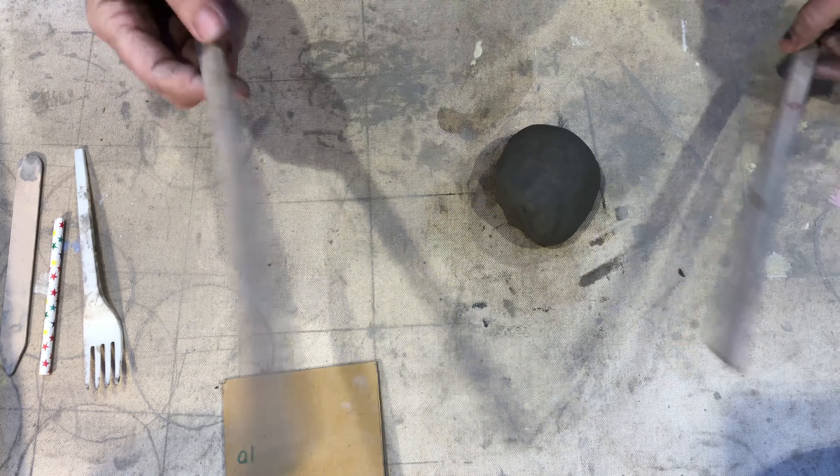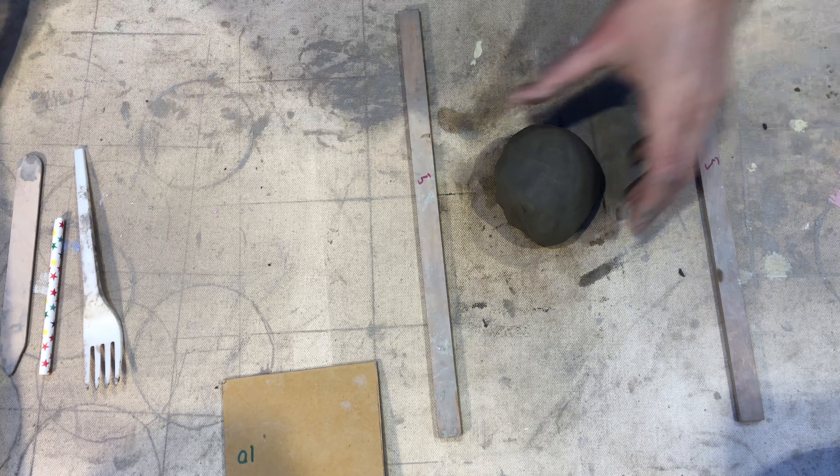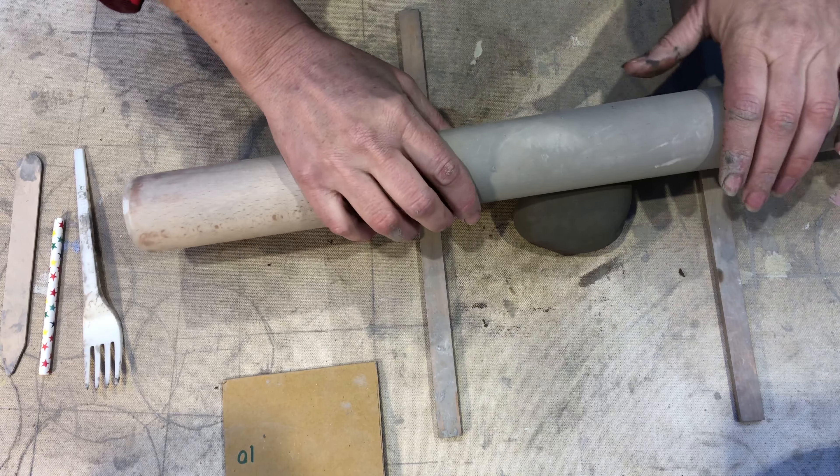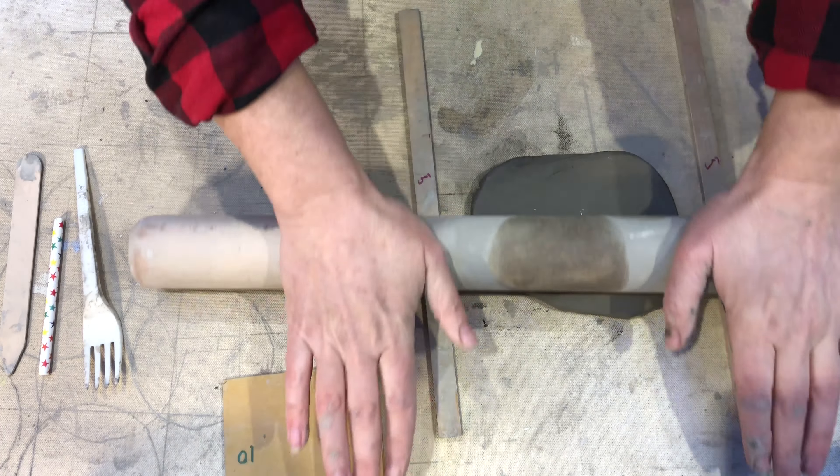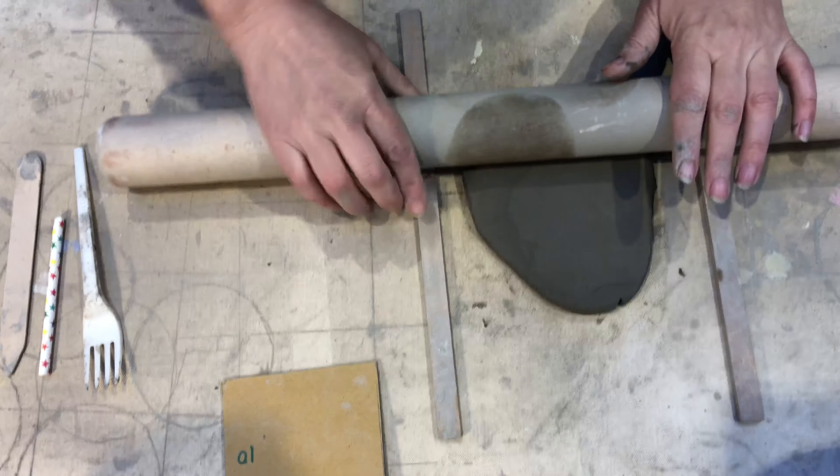Next we're going to roll the clay out. So we use these wooden battens so we get the right thickness. Place your clay down and use your rolling pin to push away from you. Make sure you roll only one way, turning and rotating the clay.